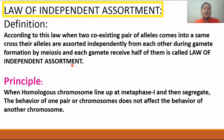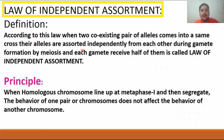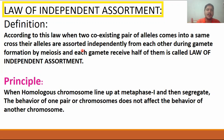What does that mean? It means that when a pair of alleles comes into the same cross, they come independently of each other. And when gamete formation occurs, each gamete receives half of them. This is known as the law of independent assortment.